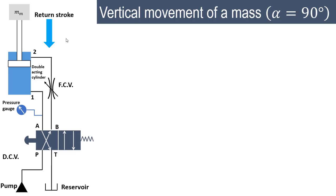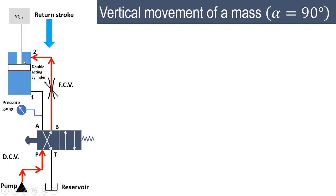When the push button is operated such that we get the left envelope, the flow of fluid through this restricted opening will be admitted on the other side, and the piston will move in the downward direction as shown.